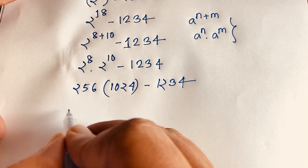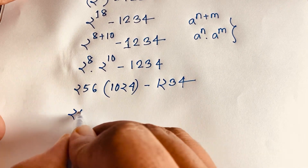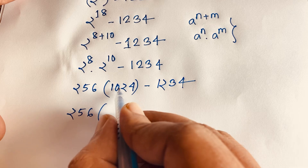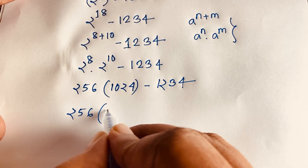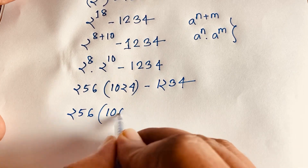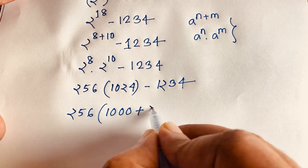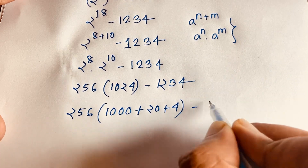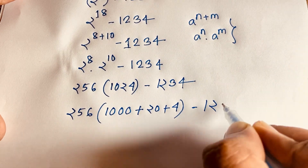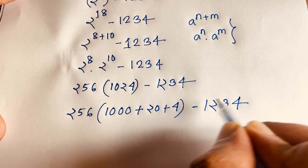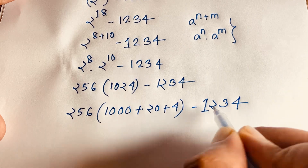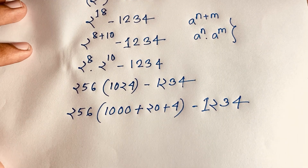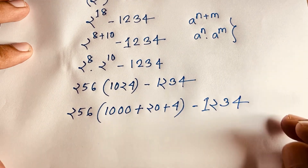Now at this moment you can see easily 256 times 1024. I can break 1024 as 1000 plus 20 plus 4, and then subtract 1234. I solved this question without a calculator — you can use these tricks.